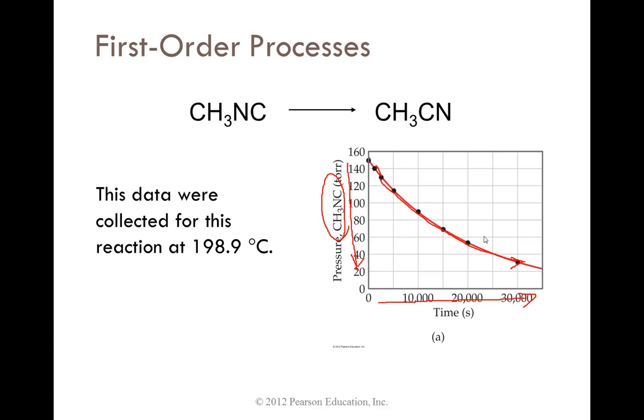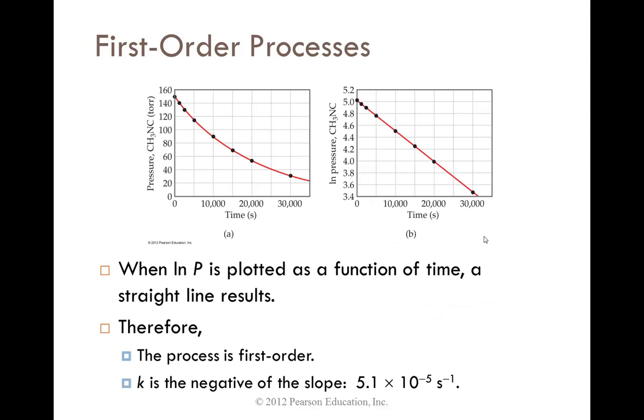It is not a straight line for just the concentration. Whereas if we take the natural log of the pressure, suddenly it becomes a straight line. When the natural log is plotted as a function of time, a straight line results. Therefore, the process is first order.